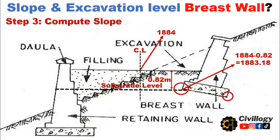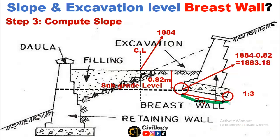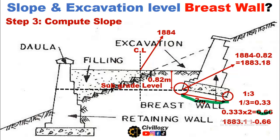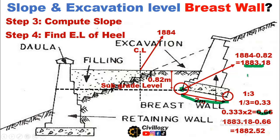Step 3 is to compute the slope. As mentioned, the base of a breast wall is in the form of a slope. Let's suppose the width of the base is 2 meters and the slope is 1:3. Slope equals y divided by x, so gradient is 1/3, giving 0.33 meters per meter. To calculate the slope offset, simply multiply the distance by the slope: 2 meters × 0.33 = 0.66 meters. Now subtract this value from the toe level computed in the previous step.